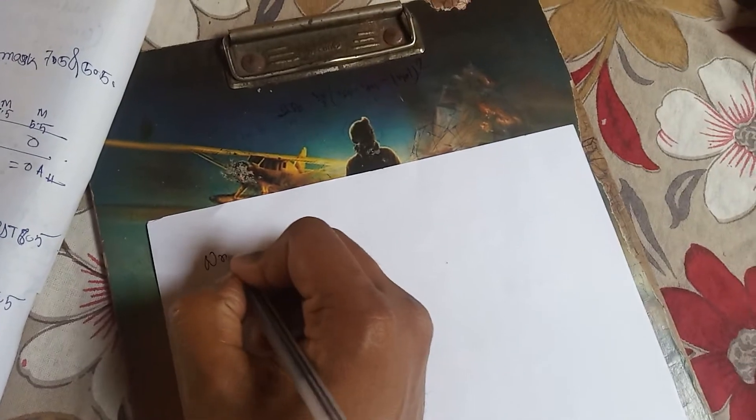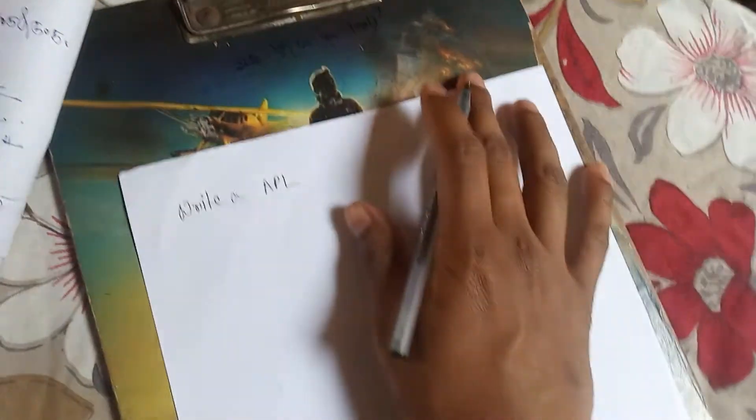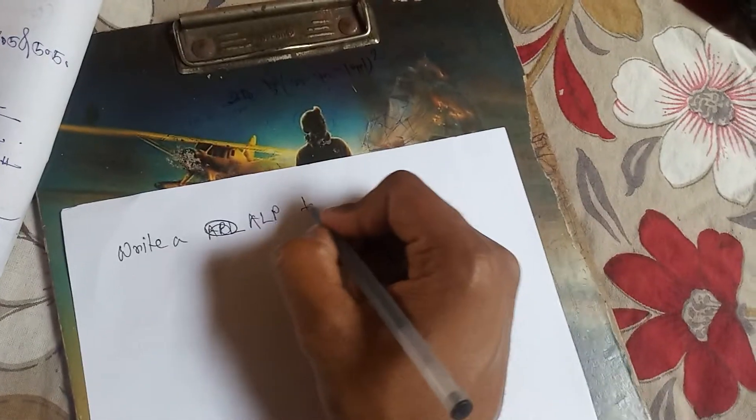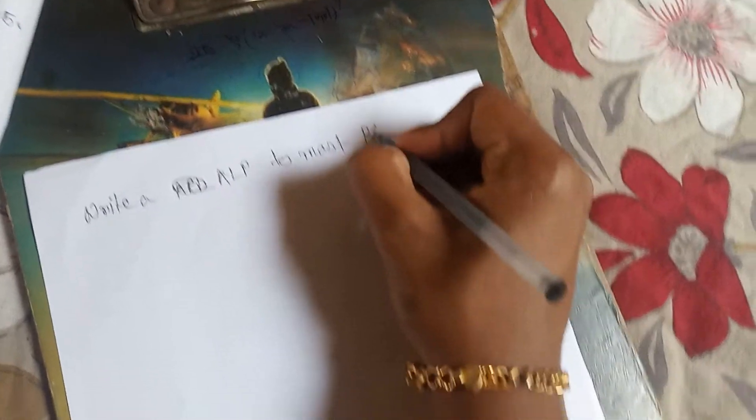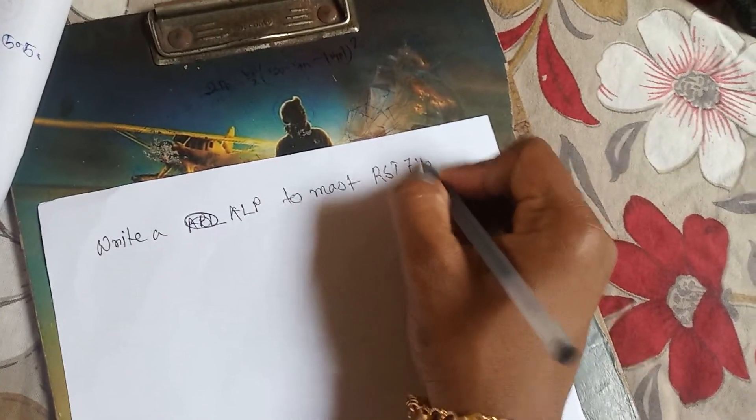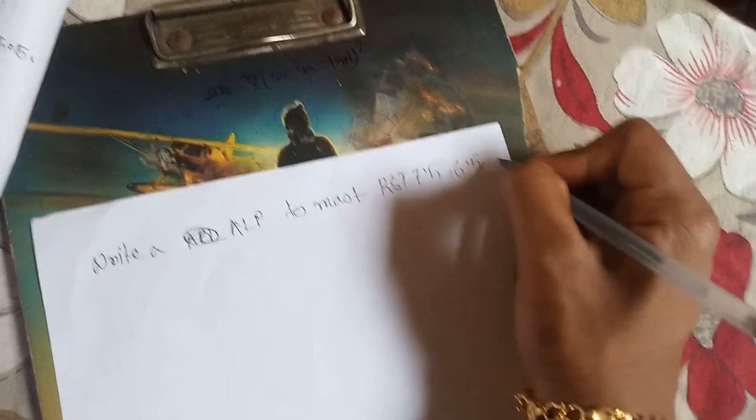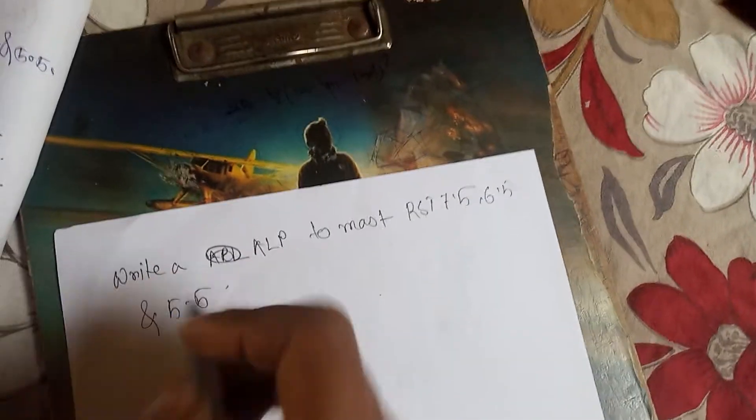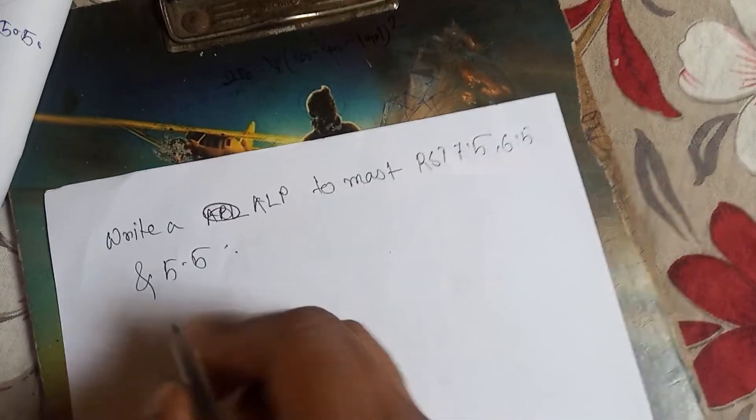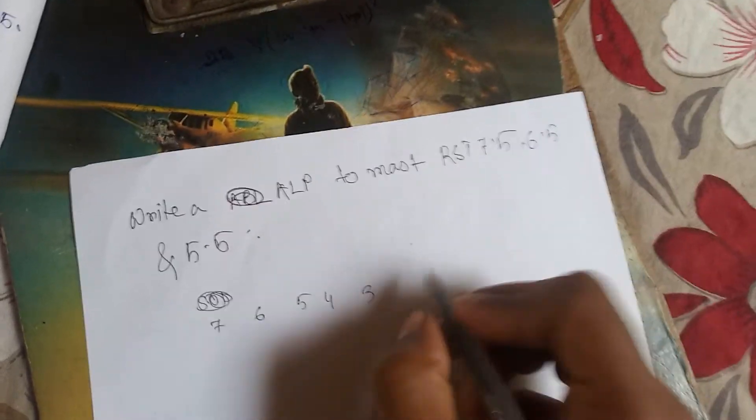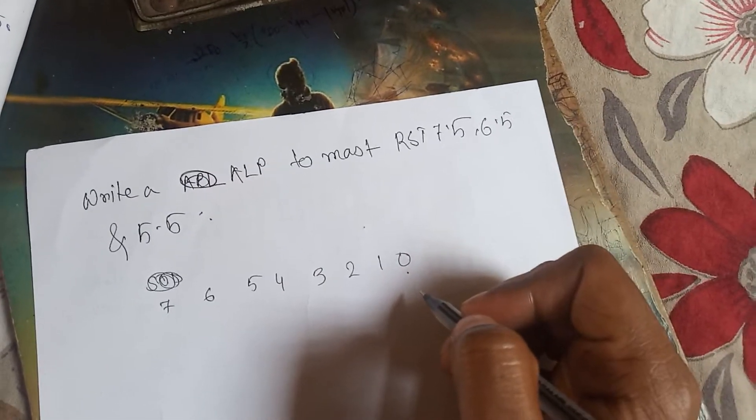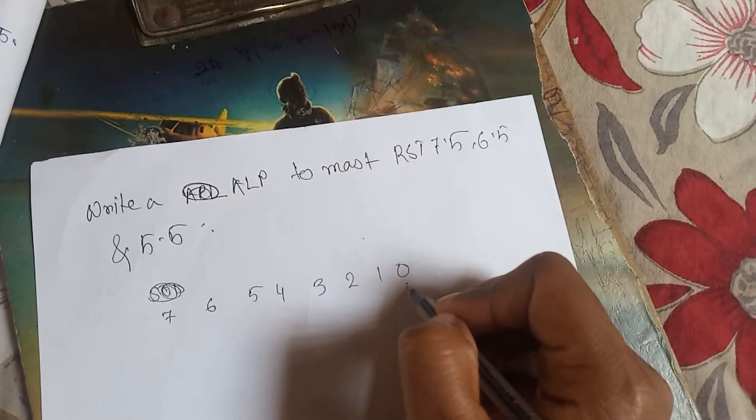Here another example. Write an ALP, means Assembly Language Program, to mask RST 7.5, 6.5, and 5.5. So what will be the ALP? First of all, SOD, that's mean 7, 6, 5, 4, 3, 2, 1, 0.